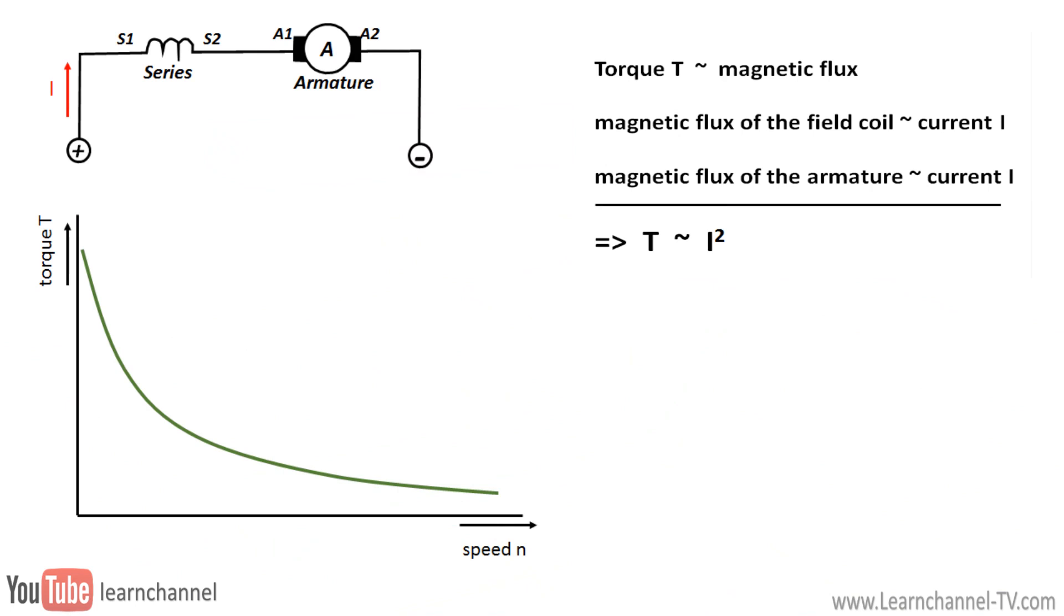Because the torque is proportional to the square of the motor current, we have low torque at high speed.